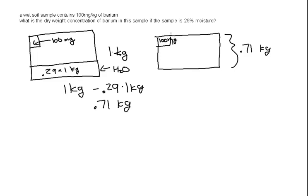Our dry weight concentration of barium will be our milligrams over kilograms. So we'll take 100 milligrams over 0.71 kilograms.